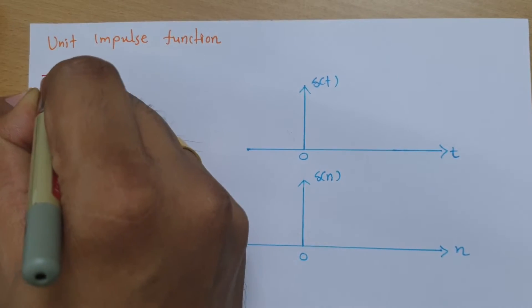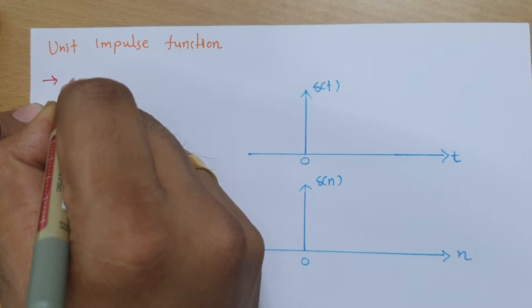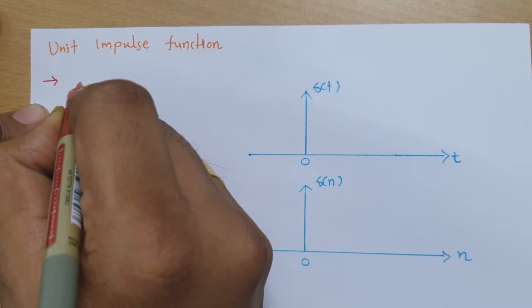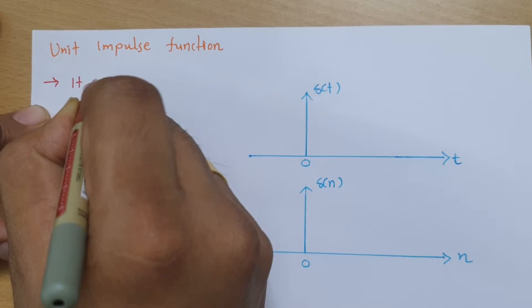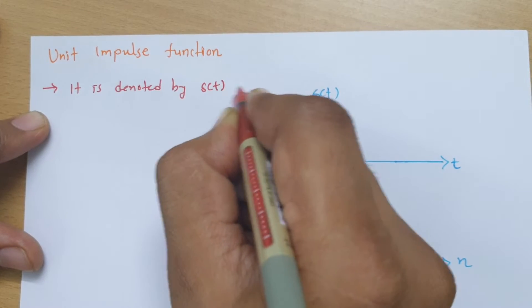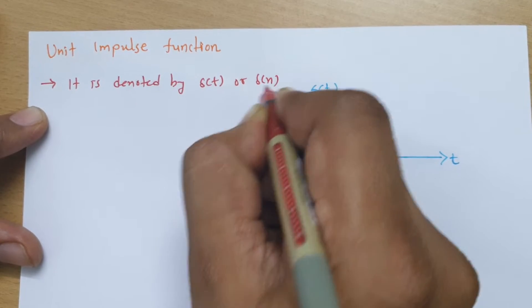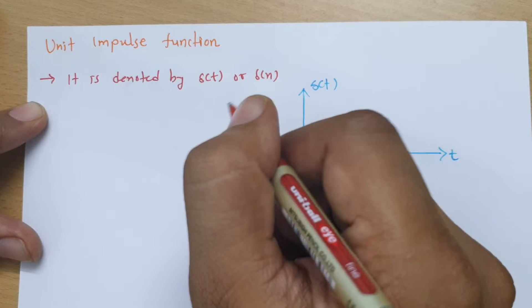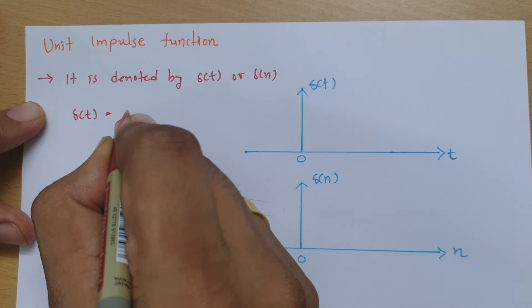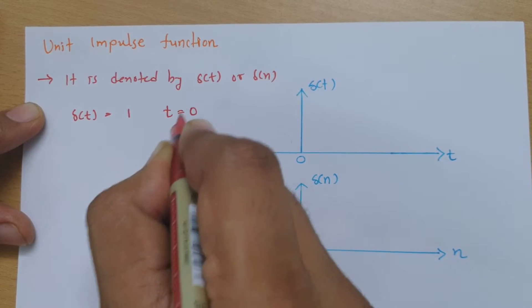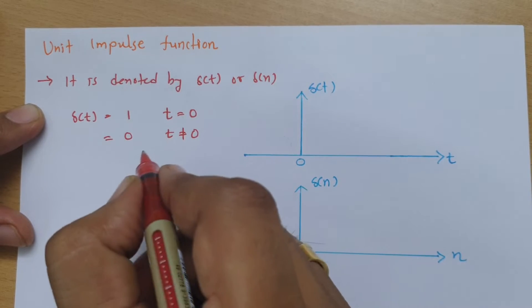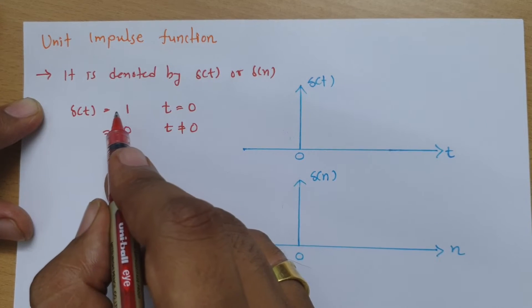When we talk about the unit impulse function, it is denoted by δ(t) for continuous time and δ(n) for discrete time. When you write it as a function, δ(t) equals 1 for t = 0 and equals 0 for t ≠ 0 — meaning elsewhere it will be 0, and at t = 0 it is 1.